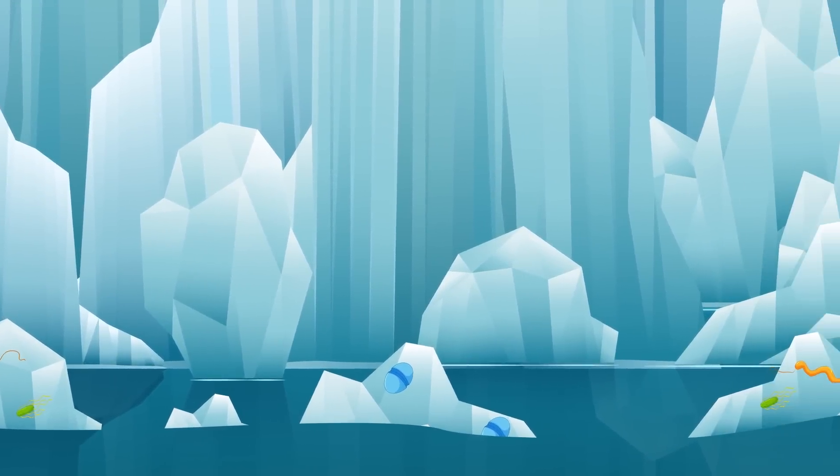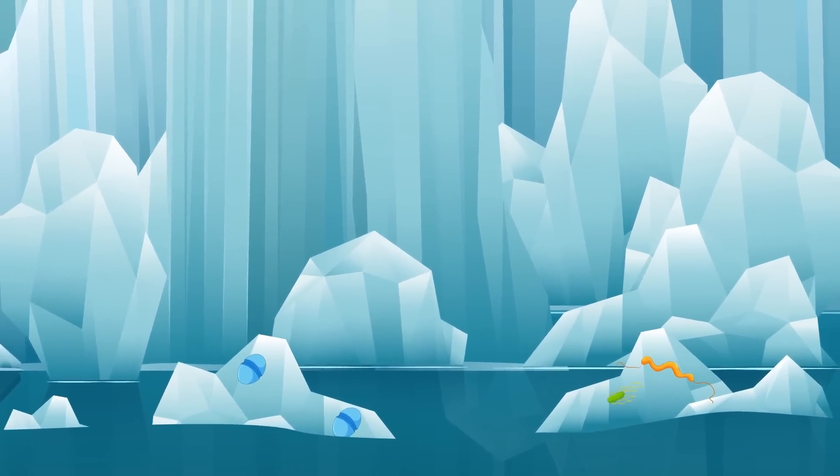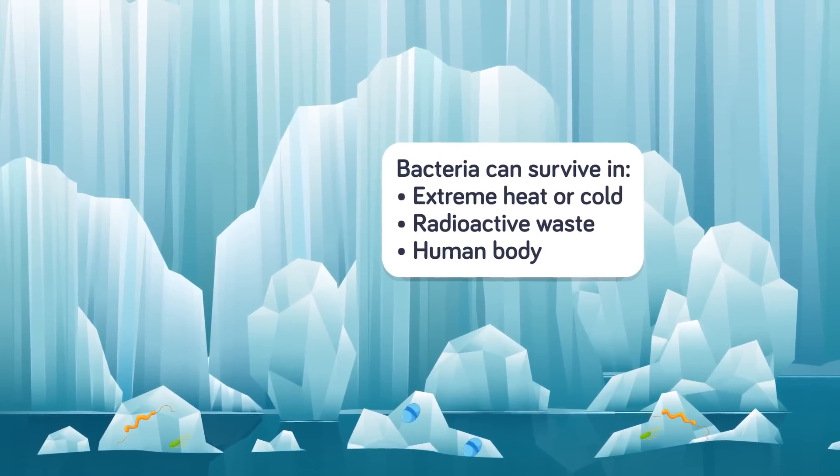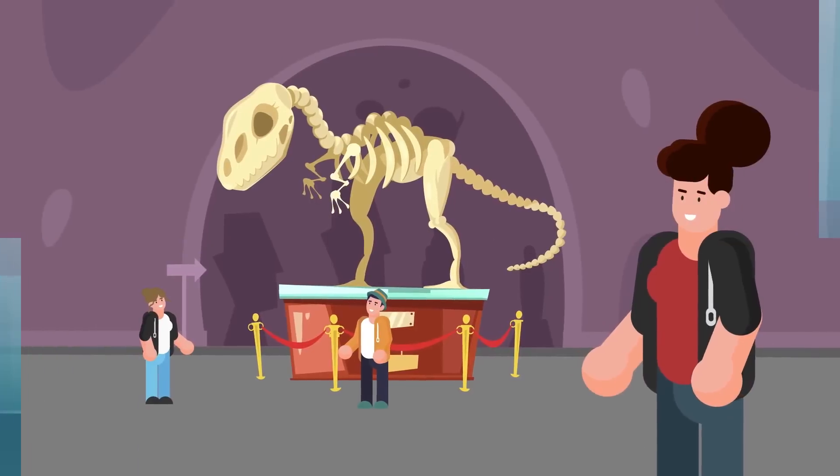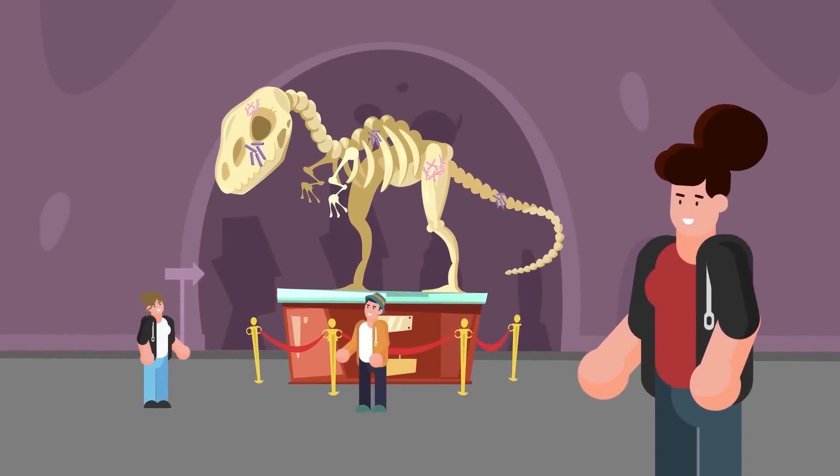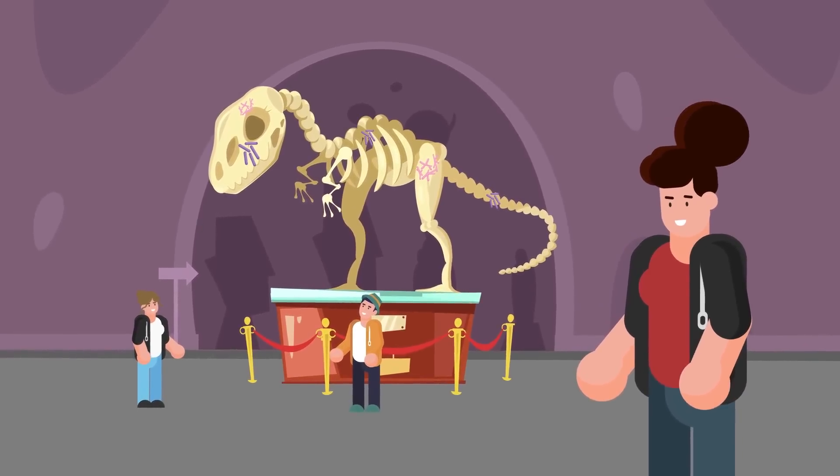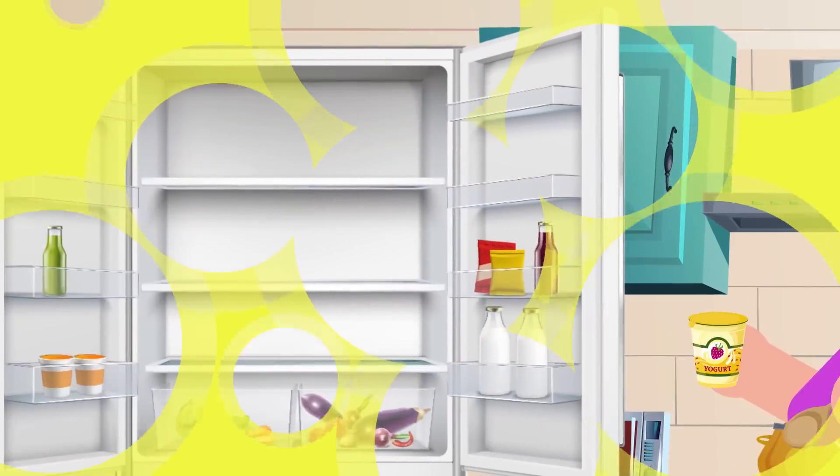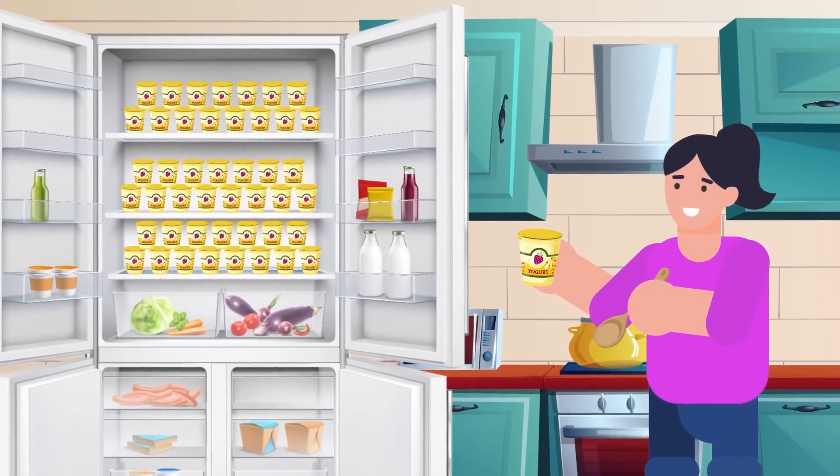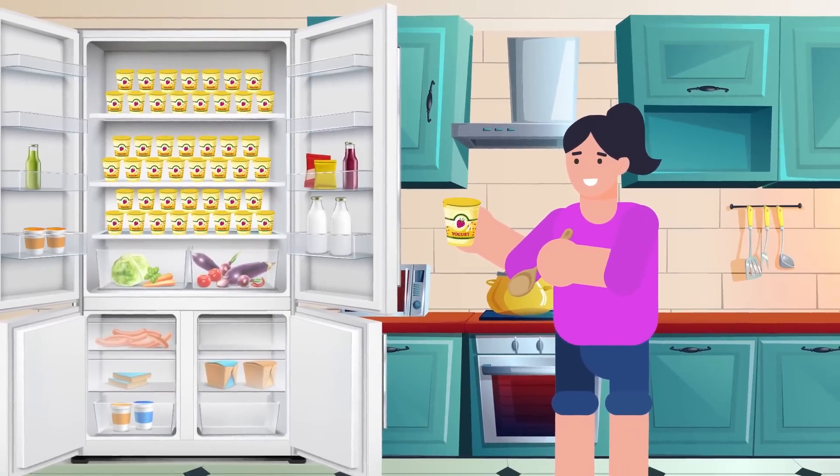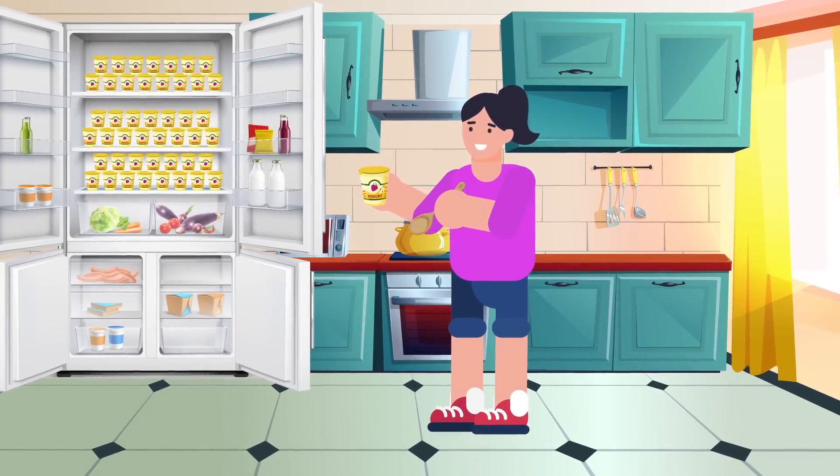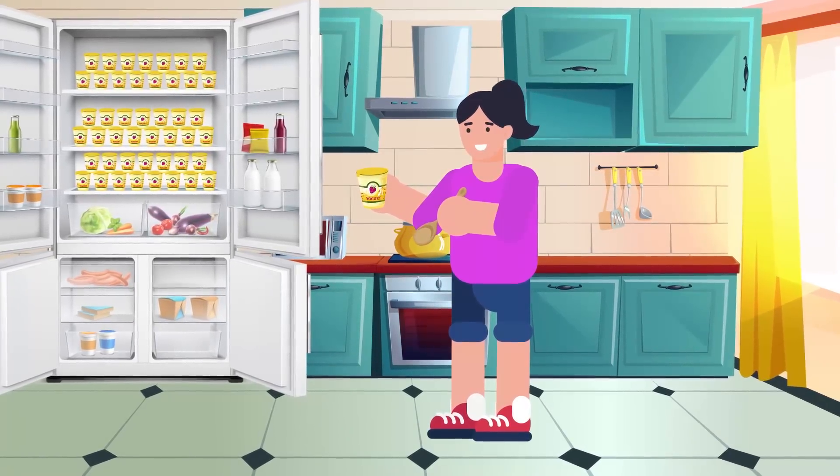Bacteria are single-celled creatures and can reproduce on their own and survive in a huge variety of environments, living comfortably in extreme hot or extreme cold, in radioactive waste, and even in the human body. The fossil record shows that bacteria have been thriving on earth for more than three and a half billion years. Most bacteria are harmless to us, and many are actually helpful. For example, certain strains of bacteria thrive in our digestive system where they help us break down food. No wonder probiotic yogurt has been all the rage lately.